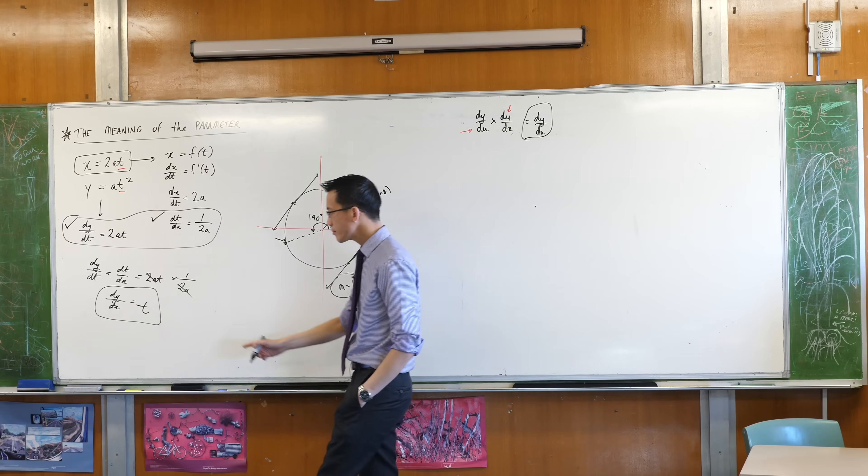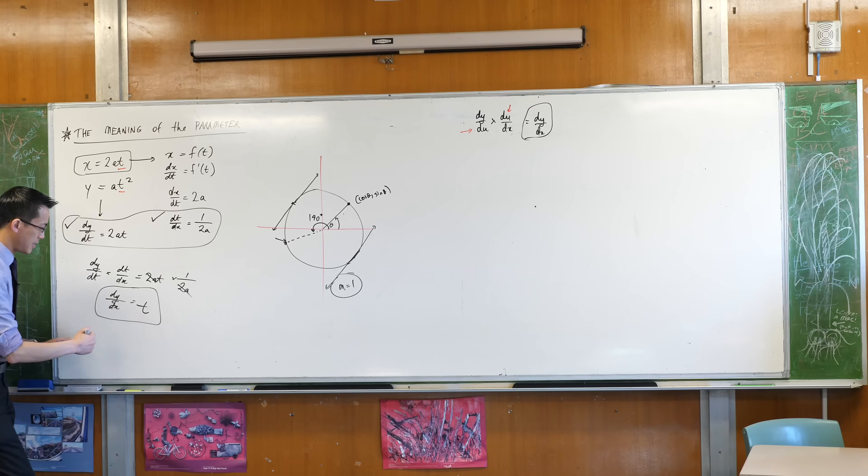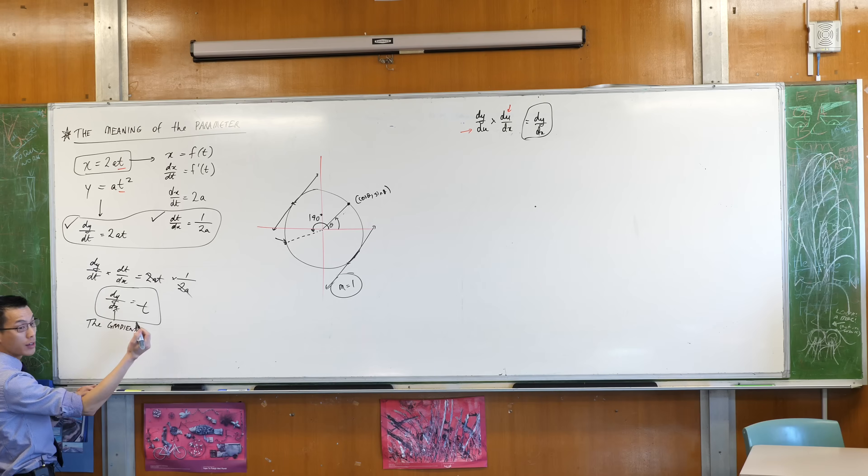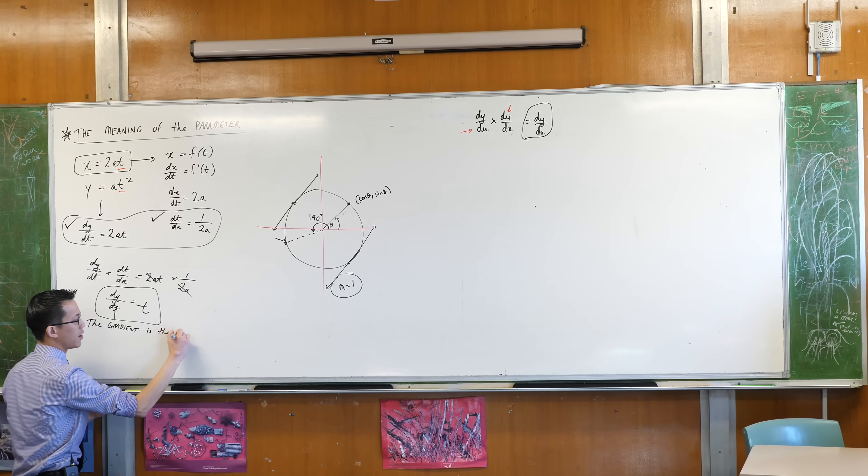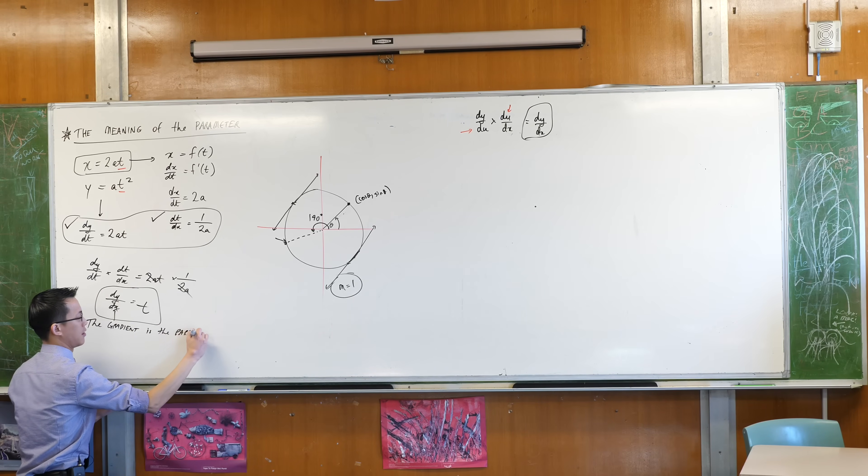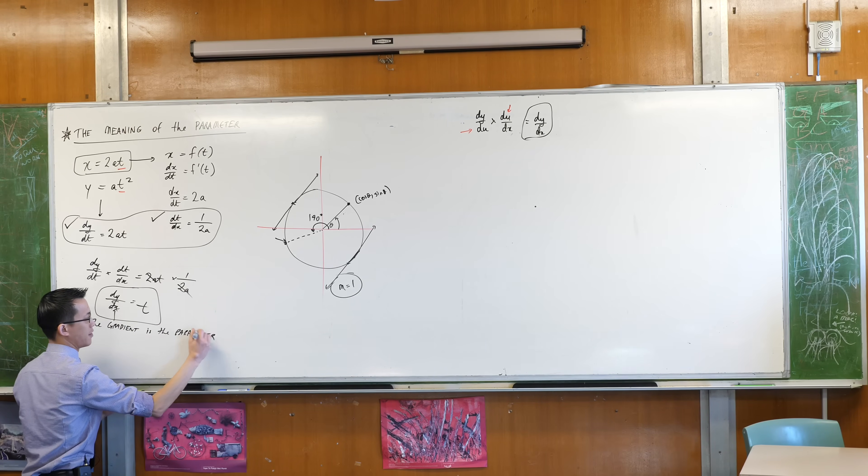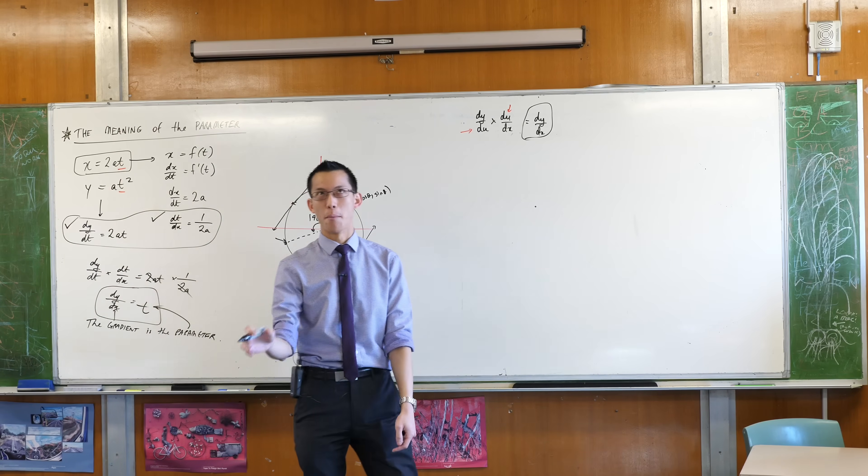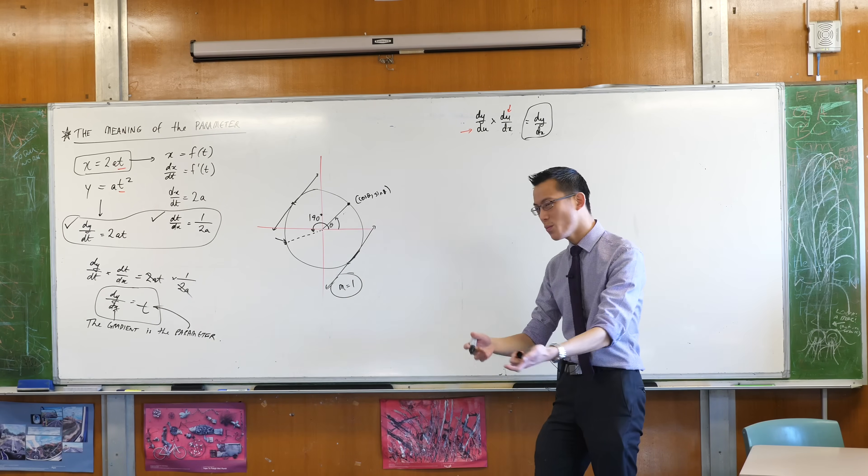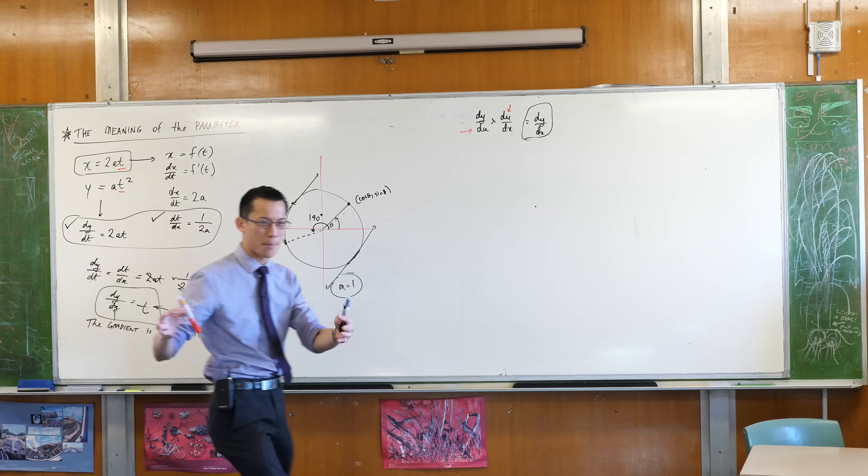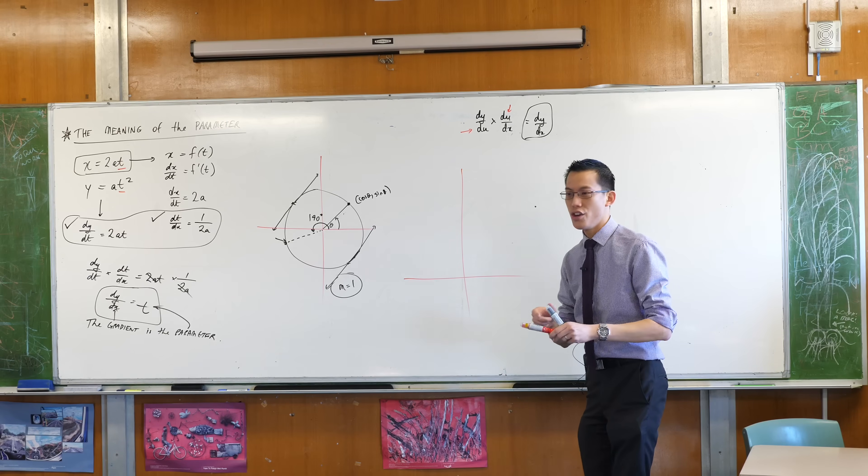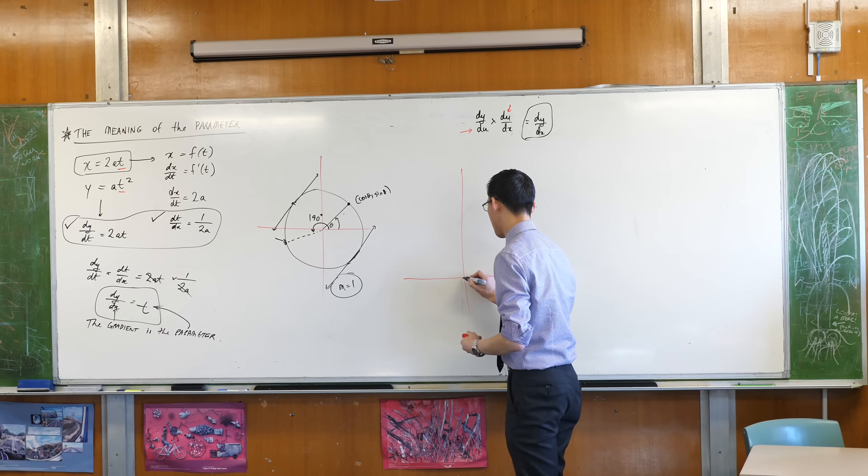But here, what this is saying is, the gradient is the parameter for a parabola. That's confusing. The gradient is the parameter on a parabola. The reason why this works, and maybe if you start to think about what a parabola looks like, you can see why this actually makes sense.